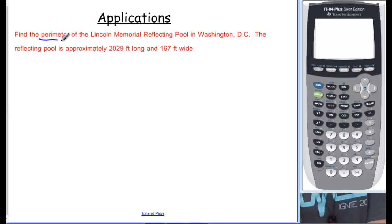One of the first things we need to know here is what are we trying to find? Perimeter, and what is perimeter? Well, that's the formula 2L plus 2W. And L in our case is how long it is, and that's 2,029. And W in our case is how wide it is, so that's 167.